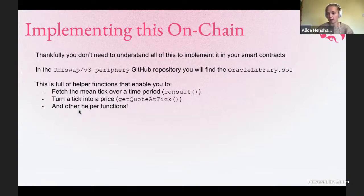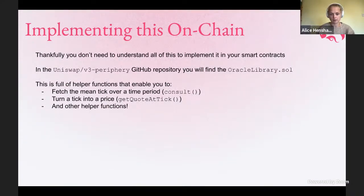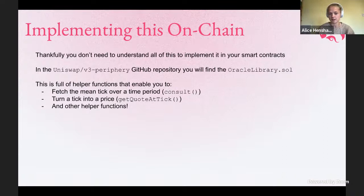There are a number of other helper functions, including methods to help you average the tick across different fee tiers if that interests you, or you can just choose one fee tier pool and consult and get quotes from that. These are the functions that should be helping you this week during the hackathon. The V3 periphery GitHub has a load of other helper libraries too. The oracle library and the weighted oracle library are where you'll find helper functions for creating an on-chain V3 oracle.